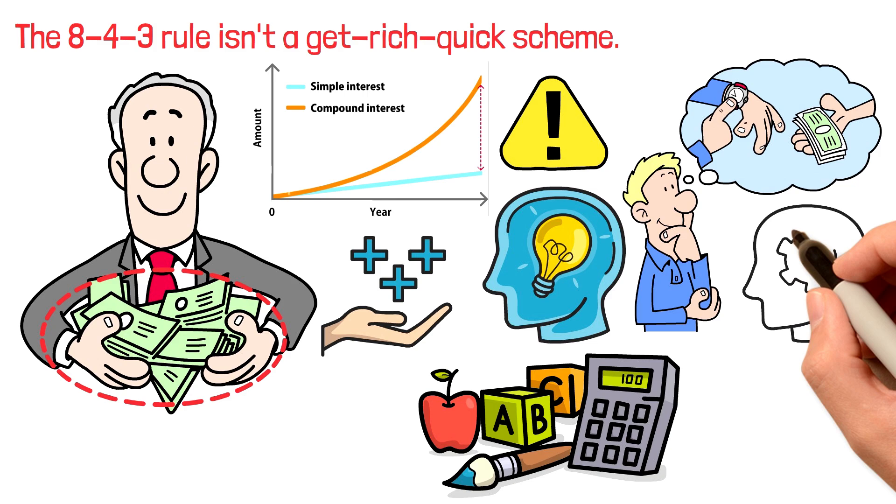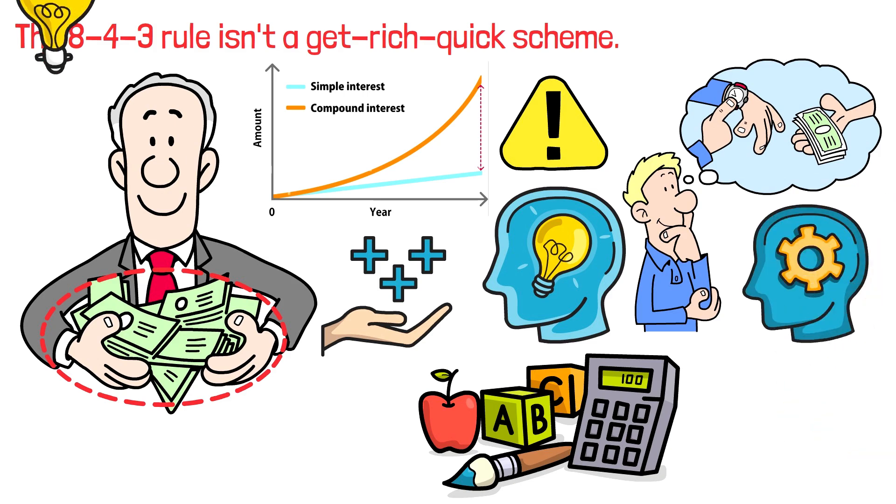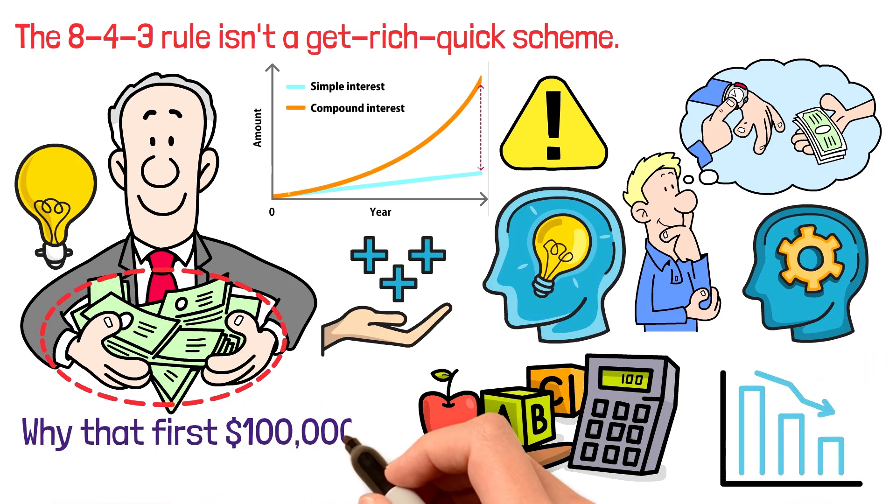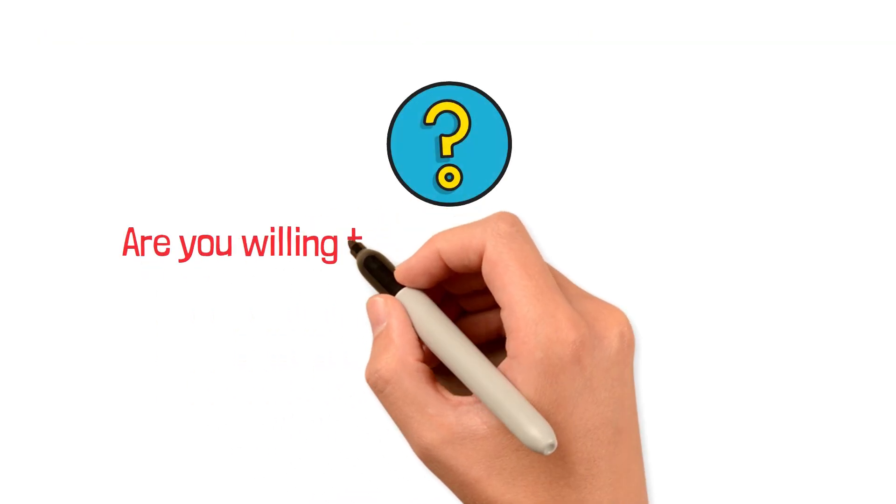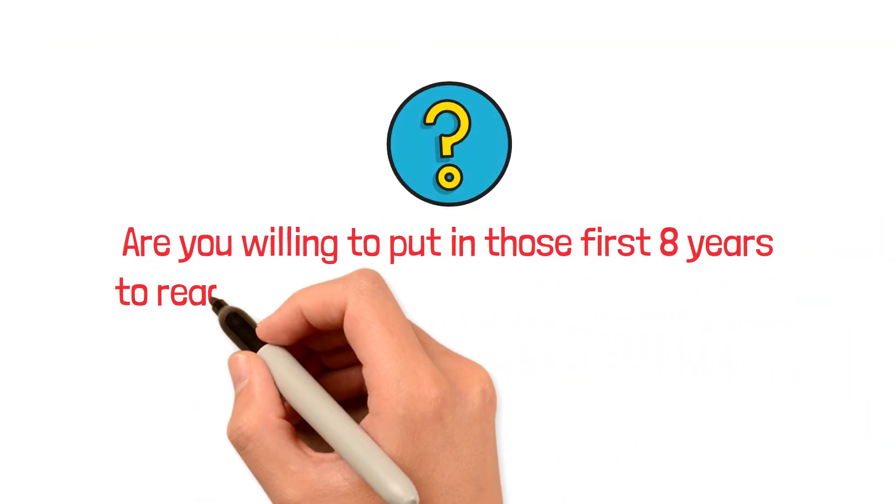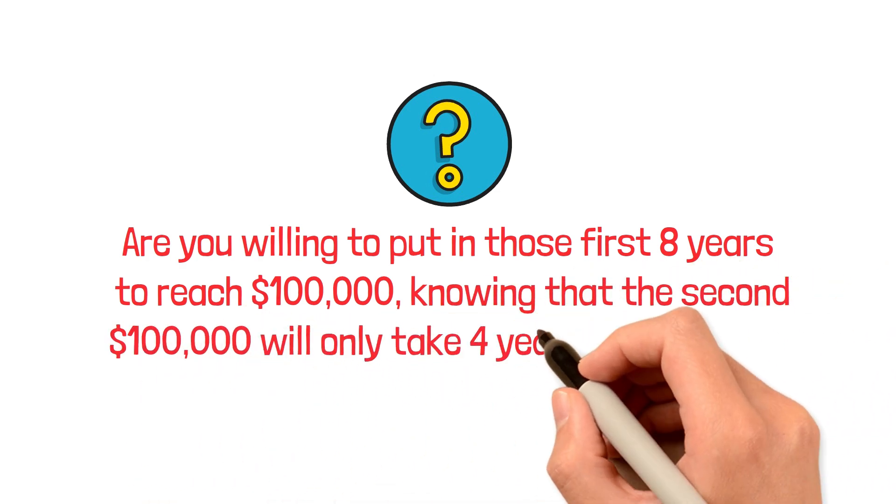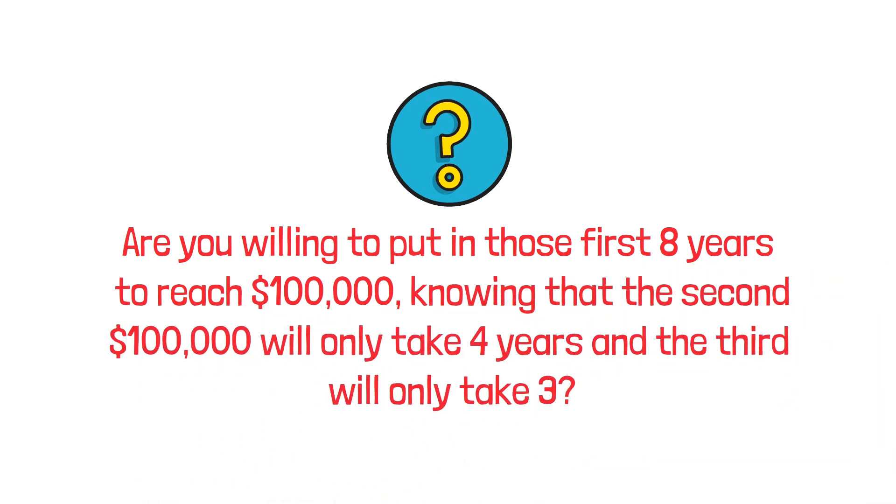But understanding this rule changes everything. It gives you realistic expectations for your investment journey. It helps you stay disciplined during the slow early years. And it shows you exactly why that first $100,000 is so crucial. The question is, are you willing to put in those first 8 years to reach $100,000, knowing that the second $100,000 will only take 4 years and the third will only take 3?